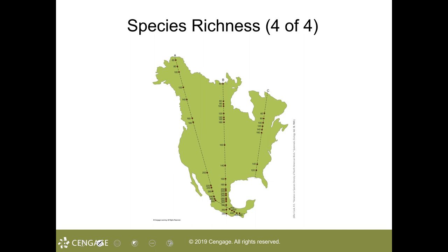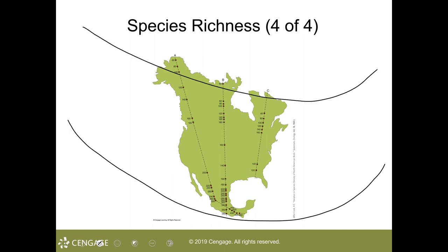Only those species capable of tolerating extreme conditions can live in an environmentally stressed community. Thus, the species richness of highly polluted streams is lower compared to that of a nearby pristine stream. The species richness of a high-altitude community exposed to harsh climates is lower than that of lower latitudes closer to the equator — meaning a community with a milder climate.